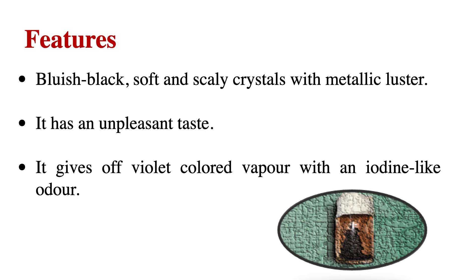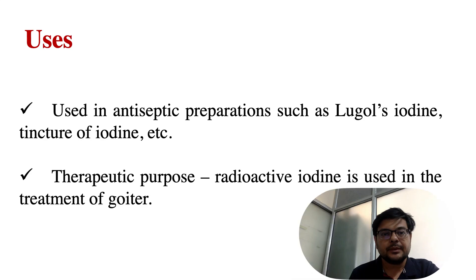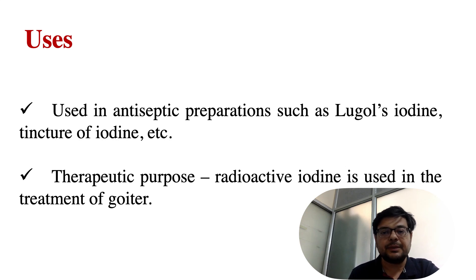Iodine features: it is bluish-black, soft and scaly crystals with a metallic luster. It has an unpleasant taste and gives off a violet-colored vapor — this is very important, the color of vapor is violet — with an iodine-like characteristic odor.